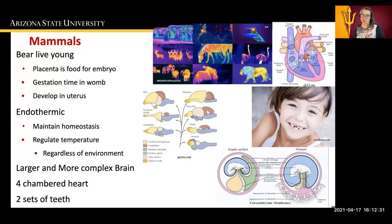Mammals are endothermic and must maintain homeostasis. They have to regulate their body temperature, regardless of the environment, to maintain a constant homeostatic environment within their body. Their larger and more complex brain leads to a more complicated nervous system. They have a four-chambered heart, and they have two sets of teeth: the baby teeth and then one other set of adult teeth.